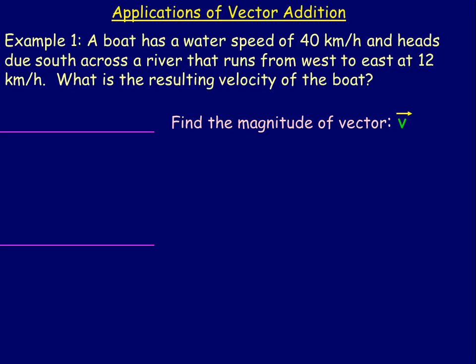In this lesson, we'll take a look at some applications of vector addition. In this first example, we have a boat that has a water speed of 40 km per hour and it's heading due south across a river that runs from west to east at 12 km per hour.